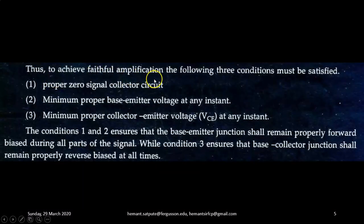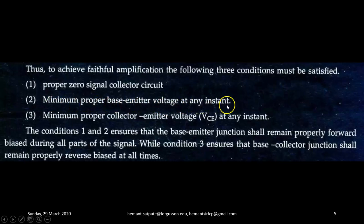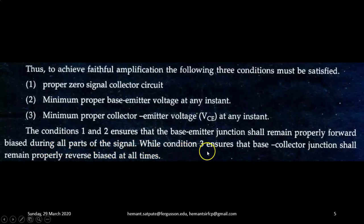To achieve faithful amplification, the following three conditions must be satisfied: number one, proper zero signal collector current; number two, proper minimum base to emitter voltage at any instant; number three, proper minimum collector to emitter voltage VCE at any instant. Conditions 1 and 2 ensure that the base-emitter junction remains properly forward biased during all parts of the signal, while condition 3 ensures that the base-collector junction remains properly reverse biased at all times.